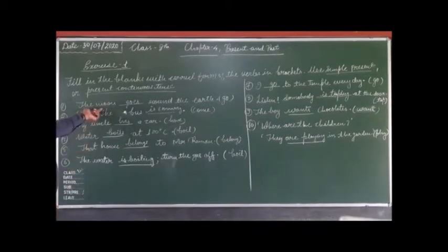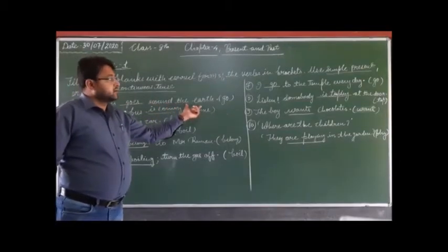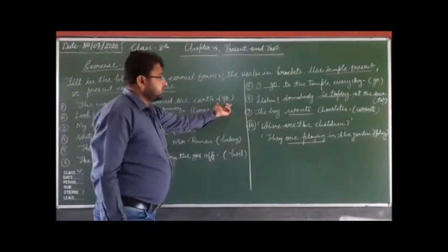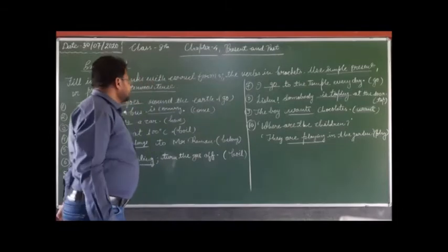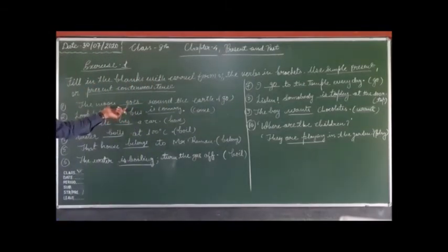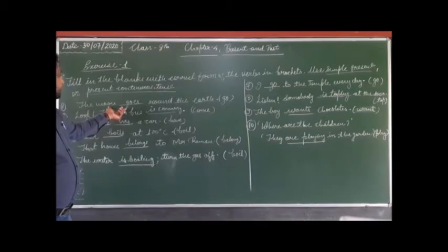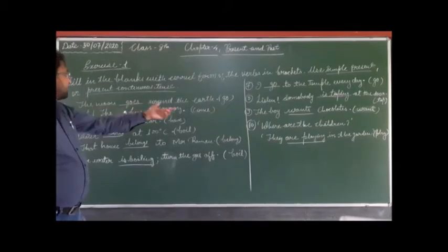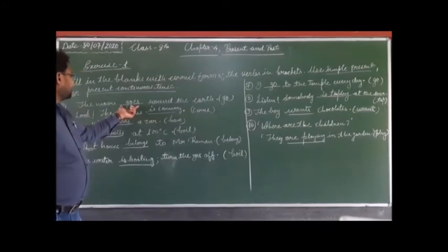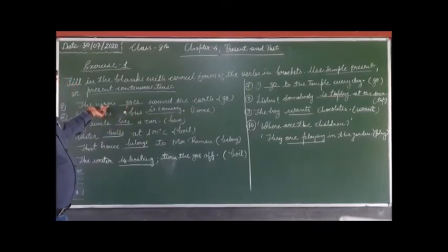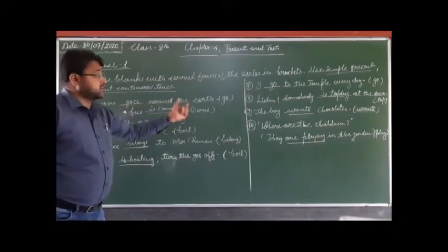First we take the sentence: the moon goes around the earth. The option given is the word form of 'go'. This is a sentence of universal truth. For universal truth we use simple present tense. So the form of 'go' is 'goes' here — the moon goes around the earth.